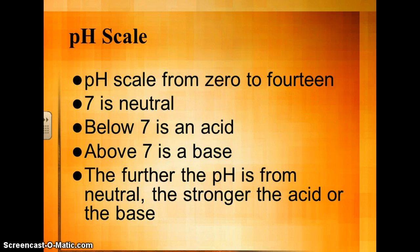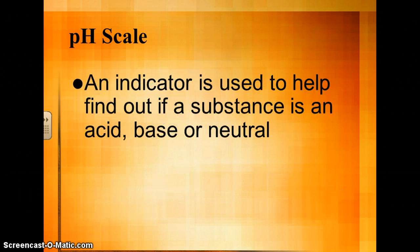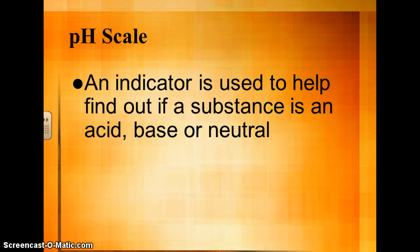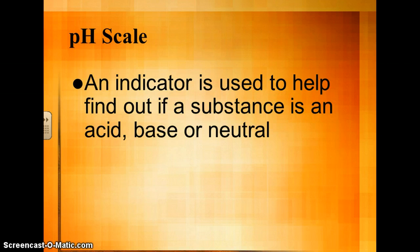The further the pH level is from neutral — the further away it is from 7 — the stronger the acid or the base. We're going to use lots of indicators in class in our experiments in the lab, and an indicator is used to help determine if a substance is an acid, a base, or if it's neutral.